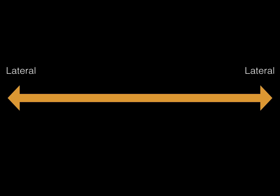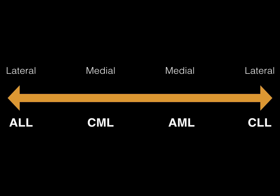The best way to approach this is to break it down into a spectrum so we can see one leukemia advancing to the next. If you paid attention in anatomy, you know the ends are lateral — so we put lymphoid on the lateral ends. All the way on the left we have acute lymphoid leukemia, all the way on the right we have chronic lymphoid leukemia. The middle portions are medial, so we put the M's — the myeloid leukemias — in the middle.